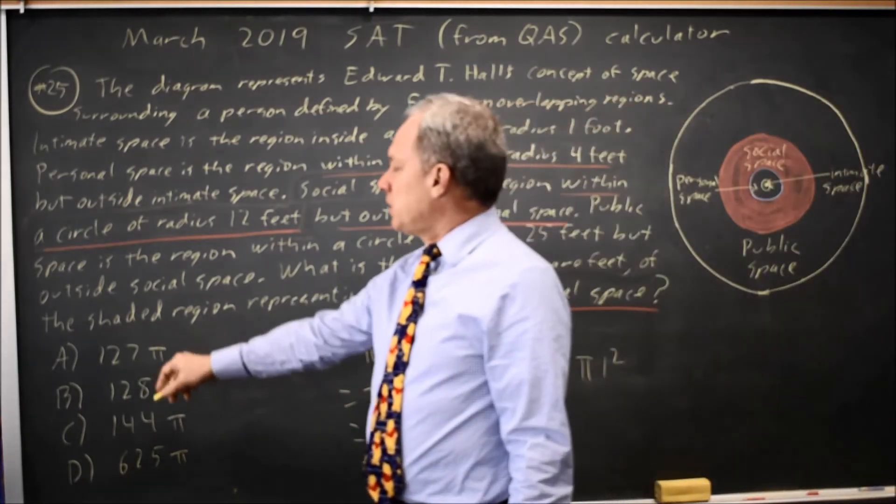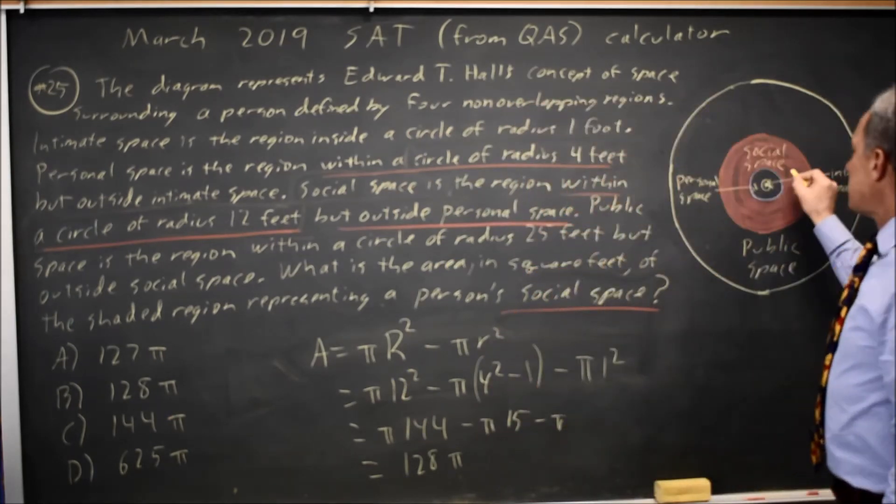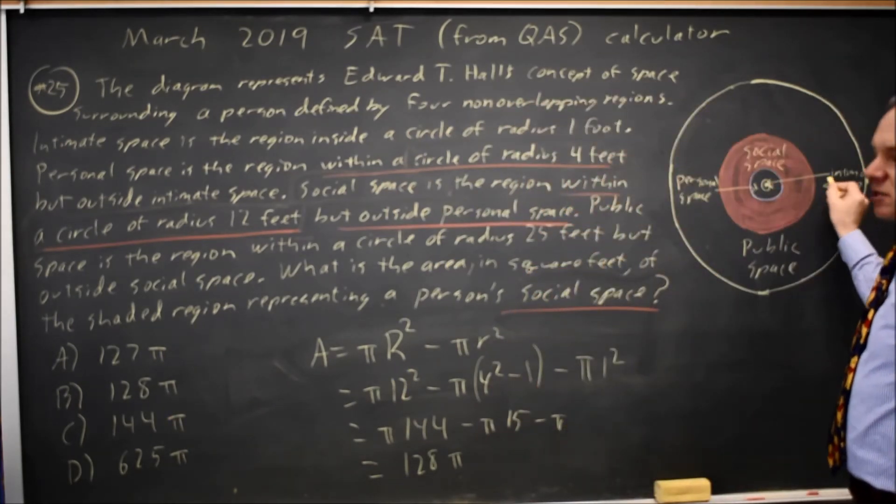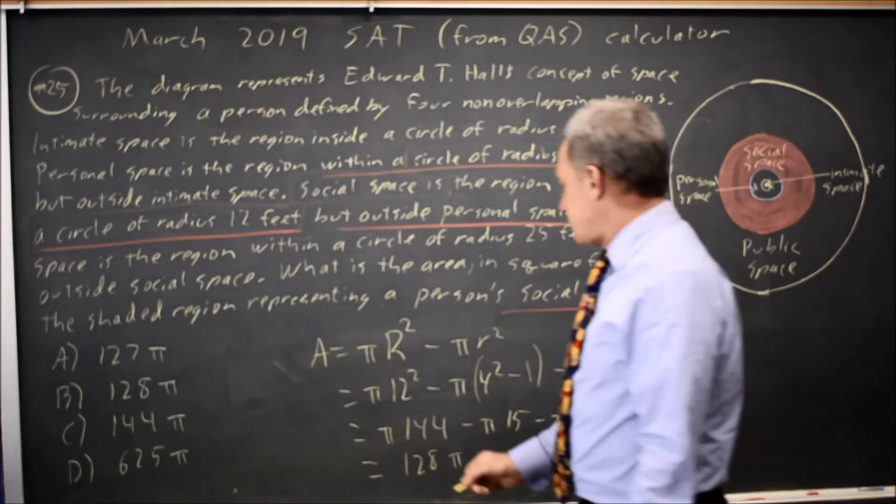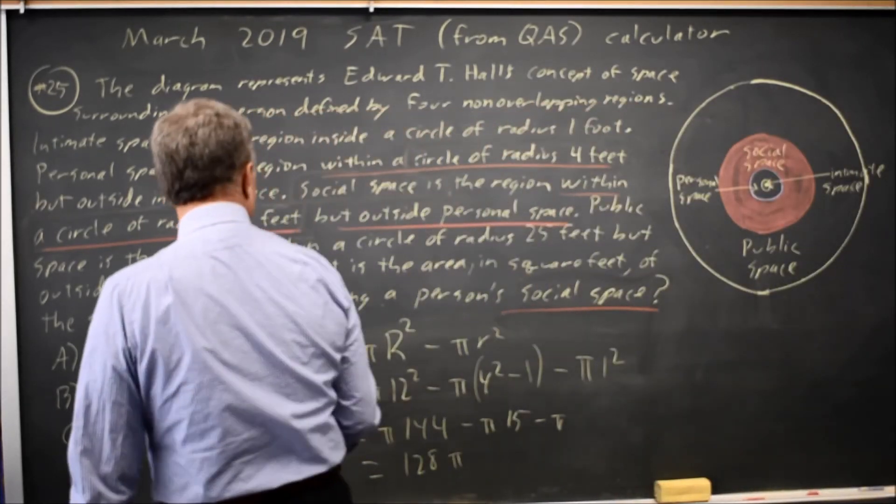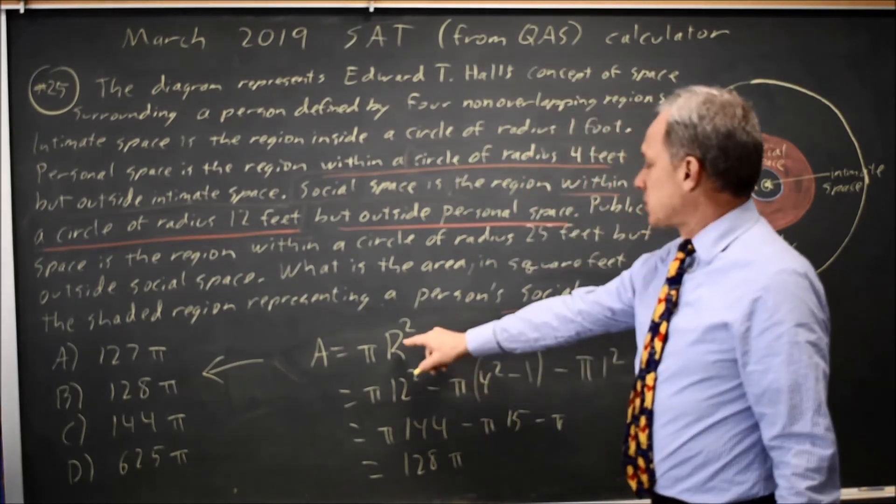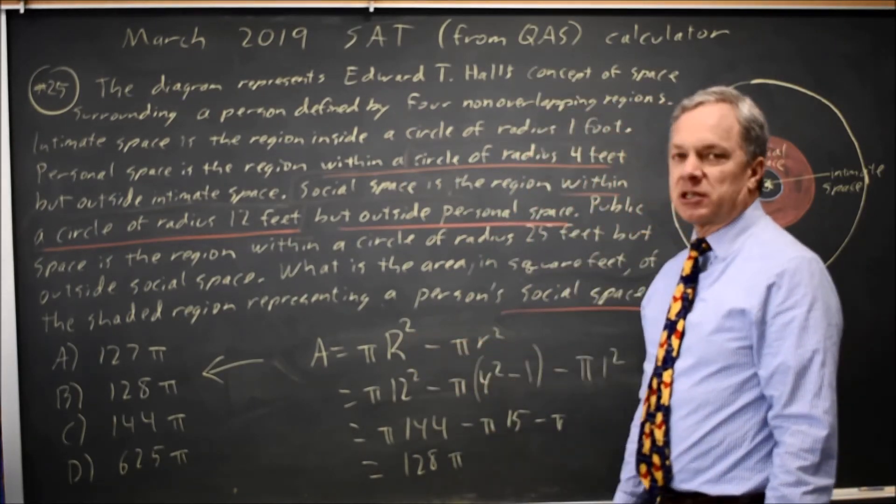127 is if you subtract 16 pi for personal space and then also subtract intimate space as 1 more pi, but the correct answer is choice B, which is pi times 12 squared minus pi times 4 squared.